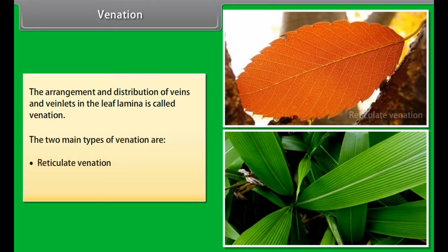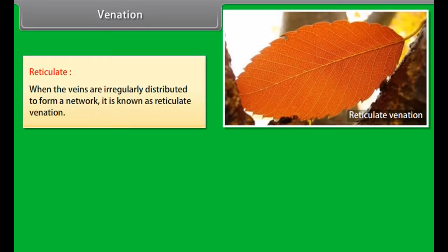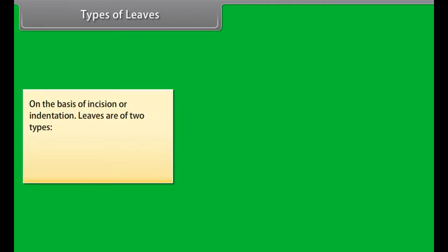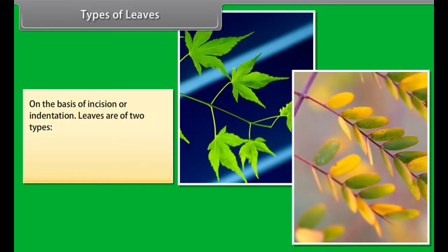Venation: The arrangement and distribution of veins and veinlets in the leaf lamina is called venation. The two main types of venation are reticulate and parallel. Reticulate venation occurs when the veins are irregularly distributed to form a network.